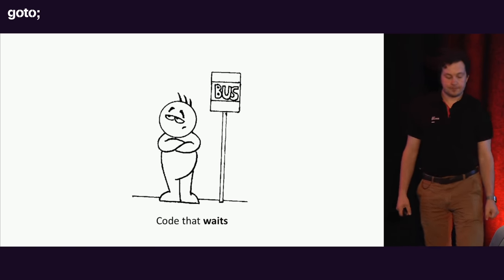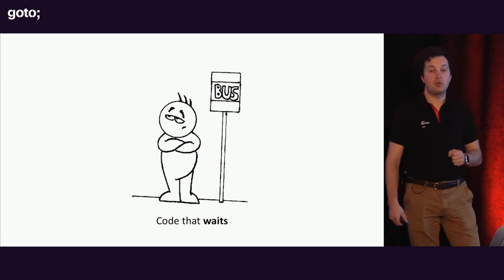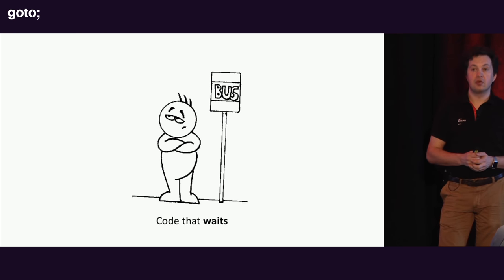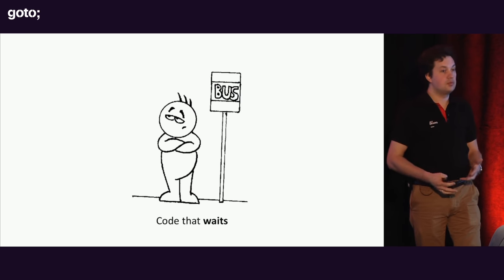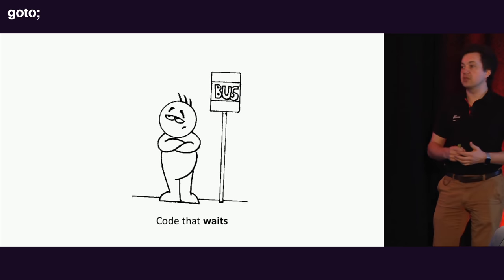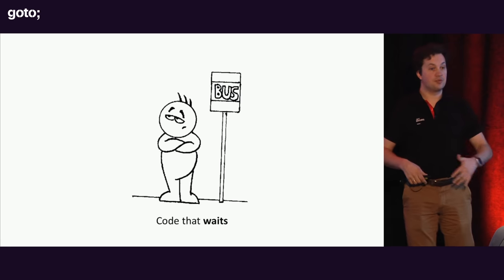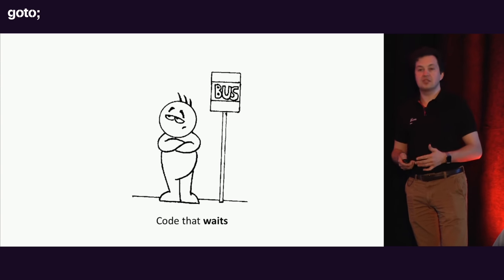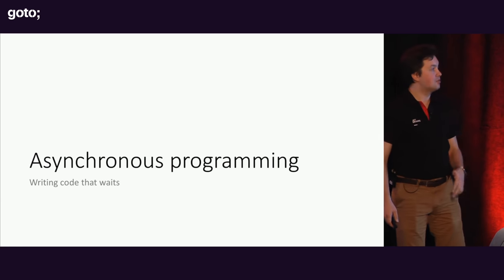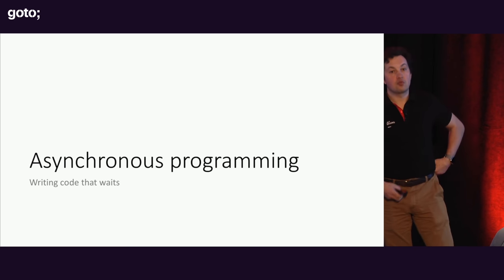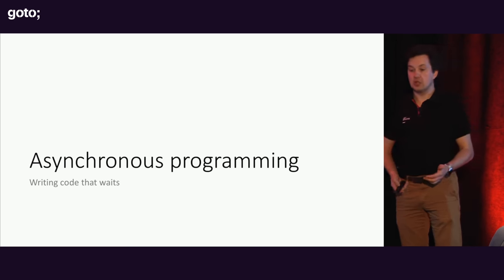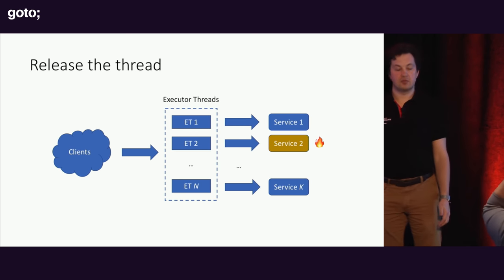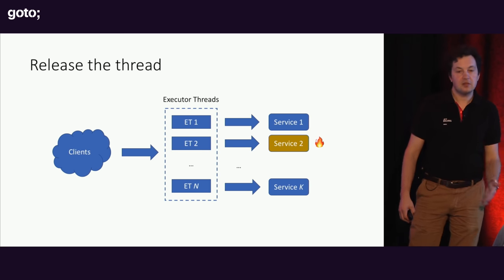This is an example of modern code that waits. Because of service-oriented architecture, most of our code does not spend its time actually consuming CPU or doing real work — it mostly just waits for responses from other services. The solution to this problem is called asynchronous programming, which has been known for ages as the solution to writing code that waits.